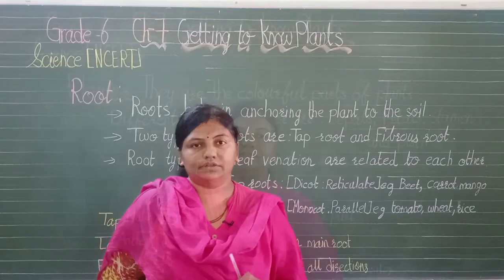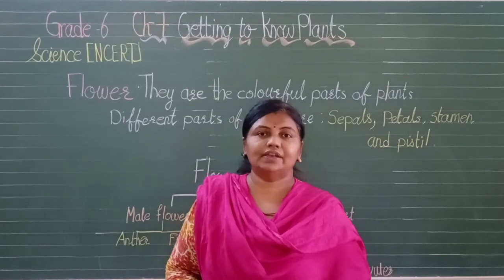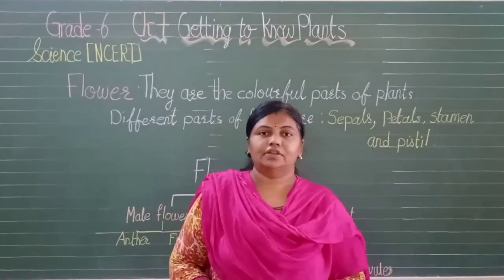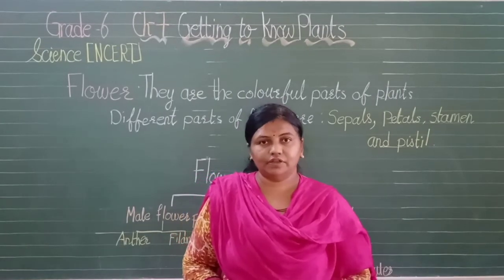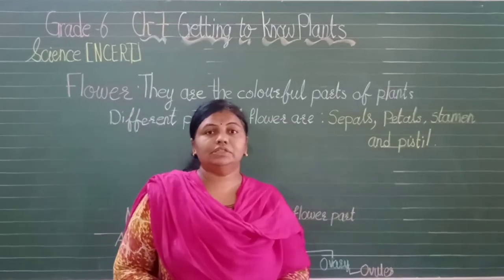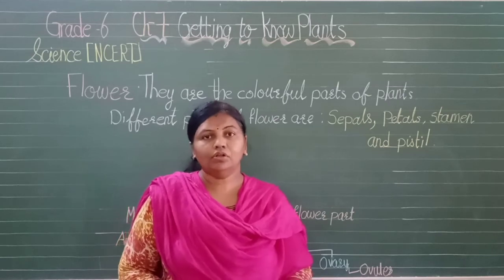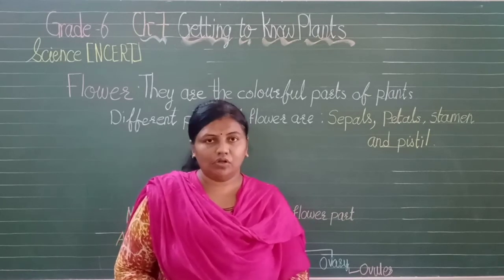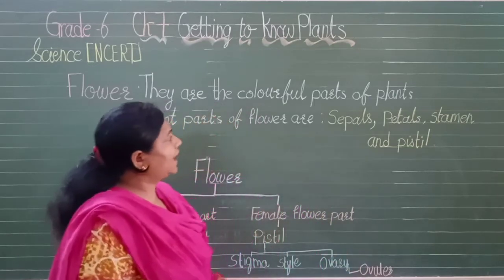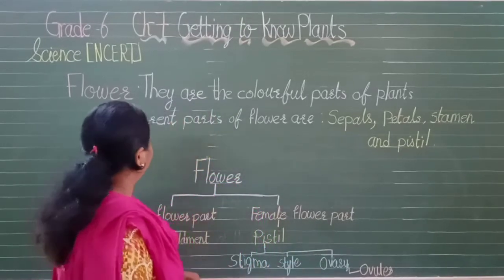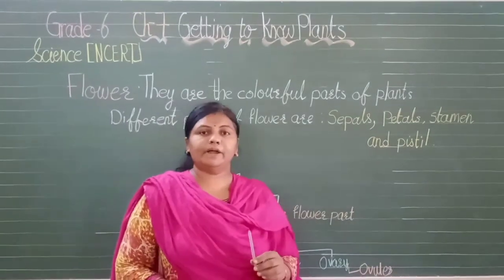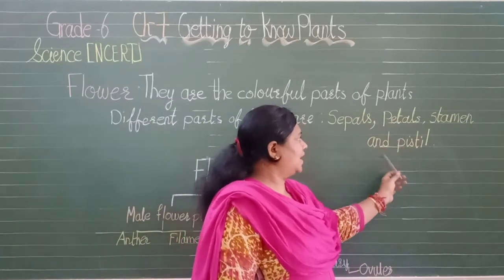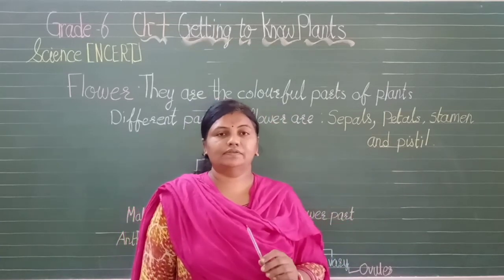Now let us learn about the flower. Flowers are the colorful parts of plants. Even in mango trees, wheat and grass there are minute flowers, though we easily identify lotus, rose and marigold. Flowers are mostly present in all plants, though absent in some. The different parts of a flower are sepals, petals, stamen and pistil.